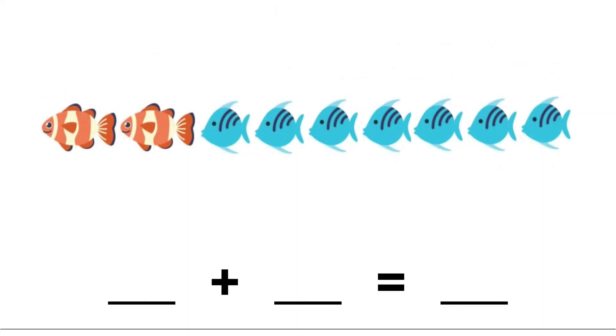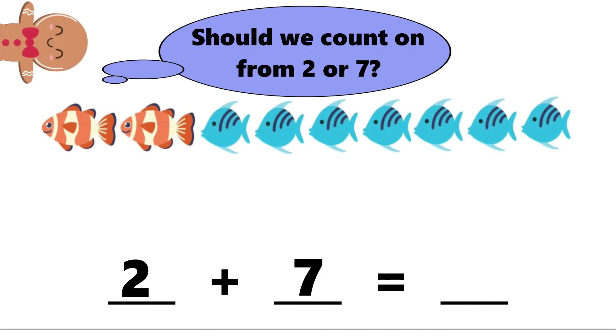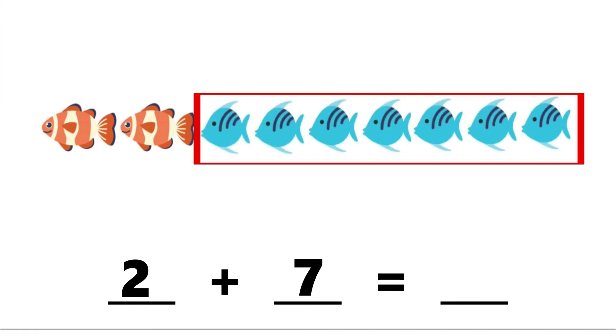How about this? 2 plus 7. Should we count on from 2 or 7? 7, because it is bigger. So we have 7, 8, 9. 2 plus 7 equals 9.